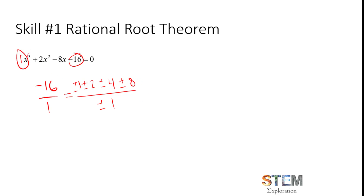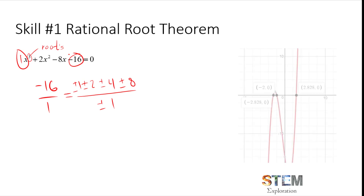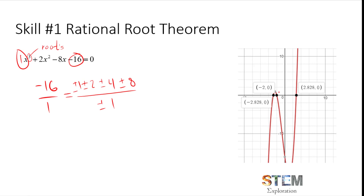Based on the fundamental theorem of algebra, we know that there should be three roots, and they could be any combination of rational, irrational, or imaginary. Looking at the function here, we're going to see that negative 2 is a root, and that was something predicted by the rational root theorem. The key takeaway is that we can clearly set a domain of values — plus or minus 16 is also a possibility — and one of those possible combinations will always be true for rational roots.